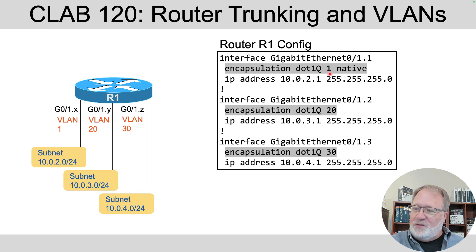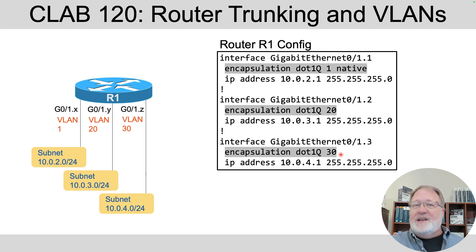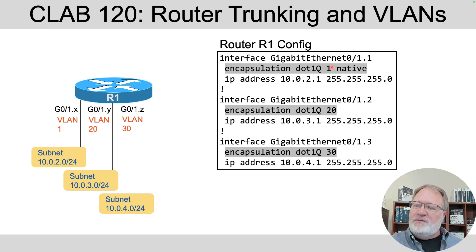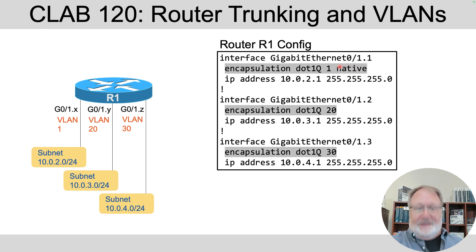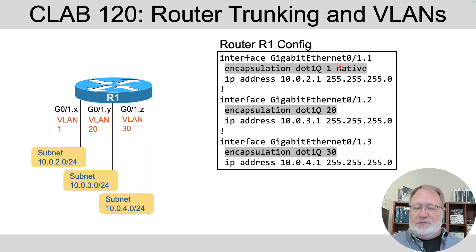So we configure VLAN 1, VLAN 20, and VLAN 30. That same analysis told us that VLAN 1 is the native VLAN. When configuring the native VLAN on a subinterface for router on a stick, you need the native keyword in the encapsulation command. That's the complete router config for router on a stick in this design.